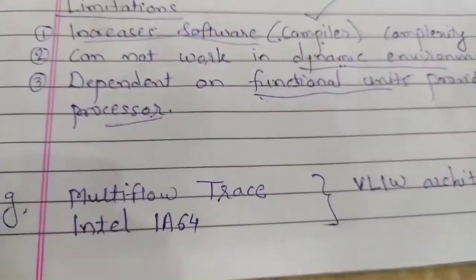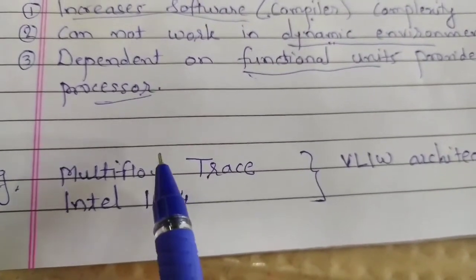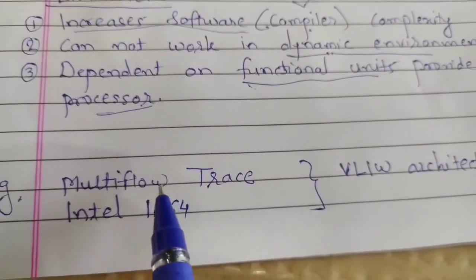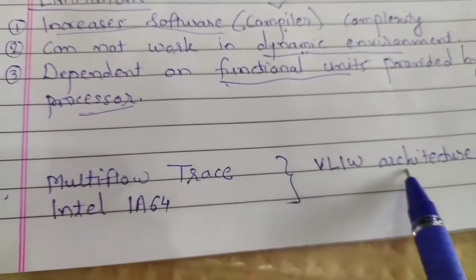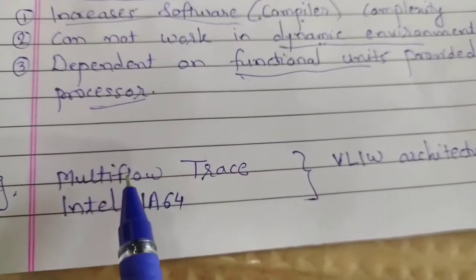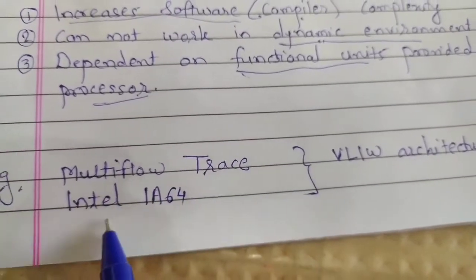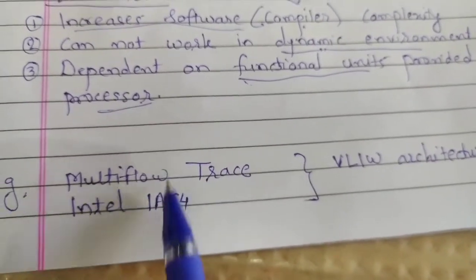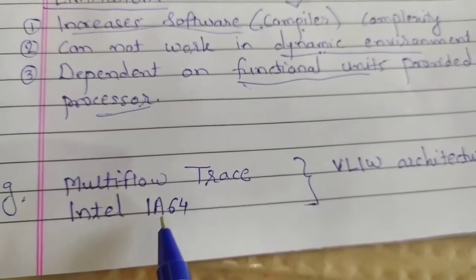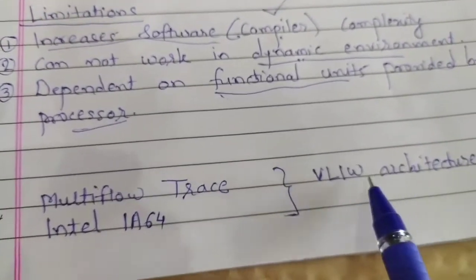These are examples of processors which use VLIW architecture: Multiflow and Intel IA-64. These are early processors which use VLIW architecture.